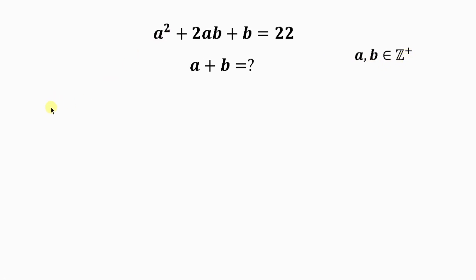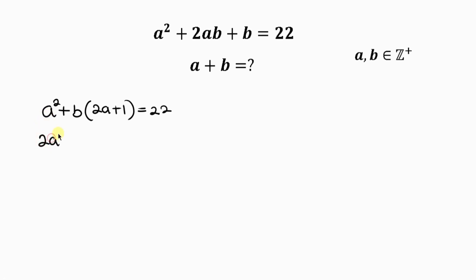So we have a squared plus b — b is common, so we can factor out b. This gives us b times (2a plus 1), and this is equal to 22. Our next step is to multiply through by 2, so 2 times a squared is 2a squared, plus 2b times (2a plus 1), equal to 44.